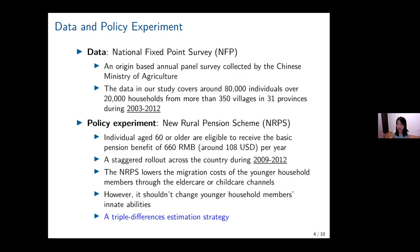The policy we use is the New Rural Pension Scheme, or NRPS for short. It is the first pension plan in rural China, which was gradually rolled out across the country over the period of 2009 to 2012. When the NRPS is implemented, everyone aged 60 or above is eligible to receive cash transfers amounting to around 110 US dollars per year.